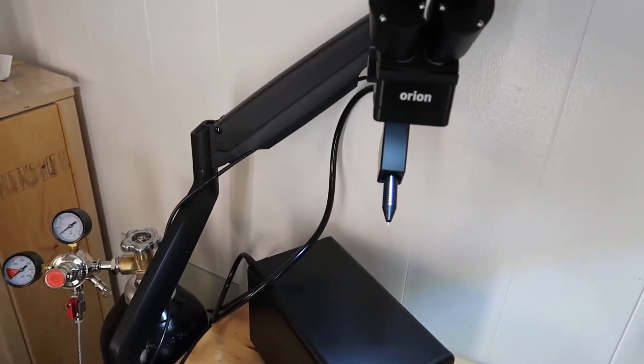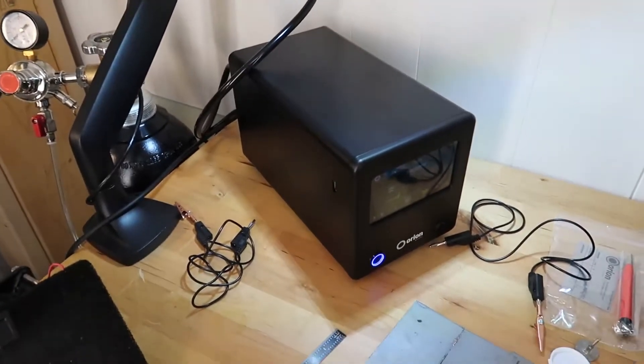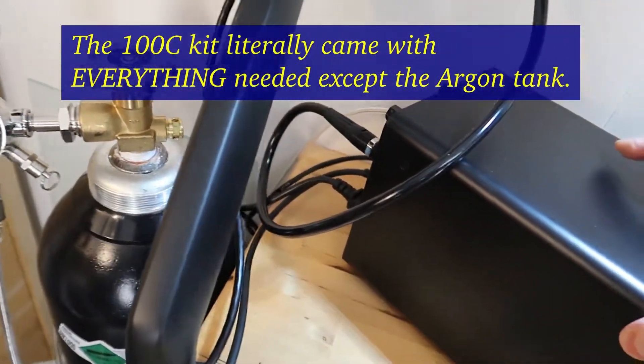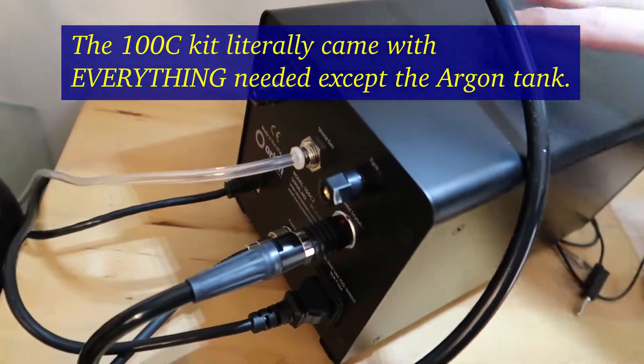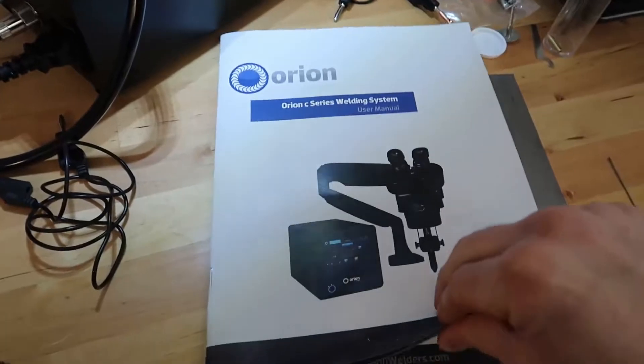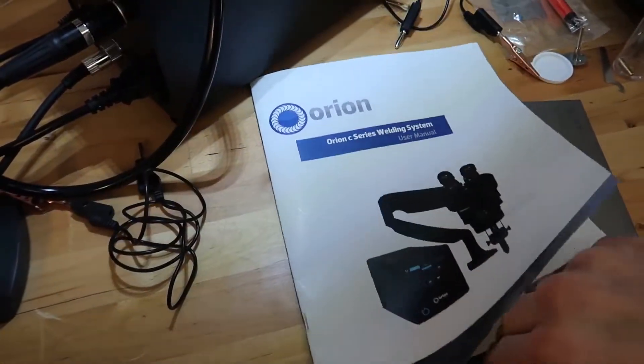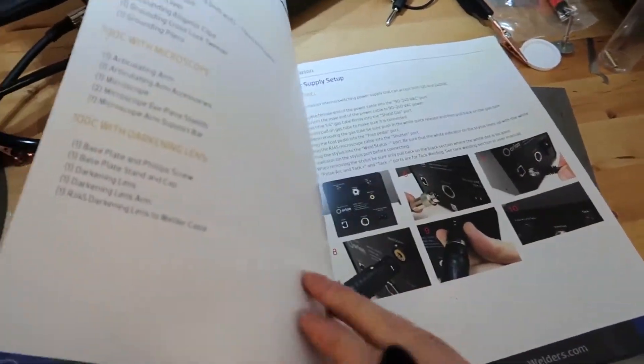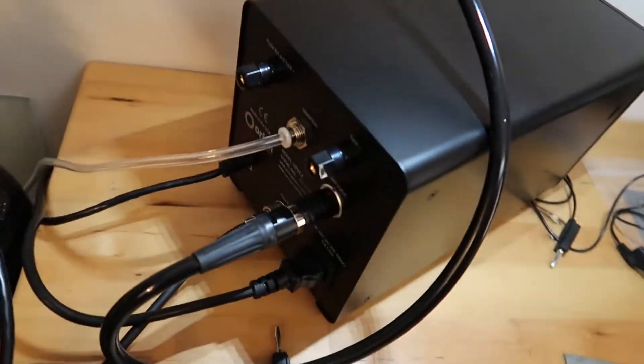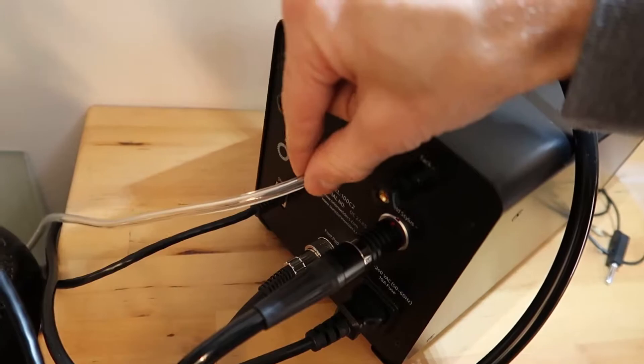Alright, getting the Orion 100C micro arc welder set up. Got the tank of argon here that plugged in all the stuff according to the manual, which is right here. It was really easy to follow the instructions. They just show you what to plug in and when. There's basically no way you can do it wrong. It's so easy to set this thing up.